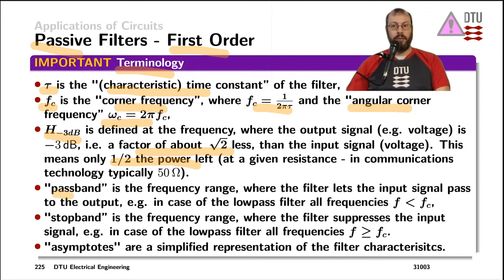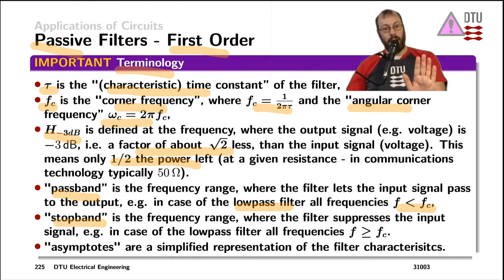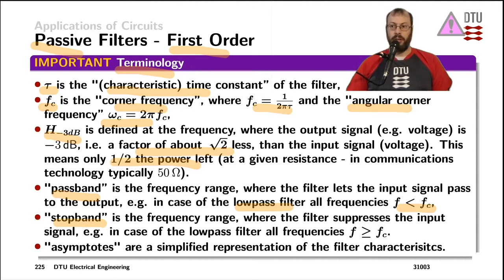The passband of a filter, typically limited by the corner frequency or corner frequencies, is the frequency range where the signal passes through the filter. For a low-pass filter, the passband is below the corner frequency. Vice versa, the stopband is where the filter blocks the signal from reaching its output — for a low-pass filter, that is all the frequencies above the corner frequency.